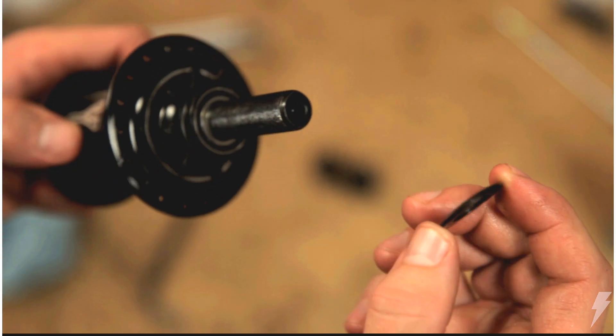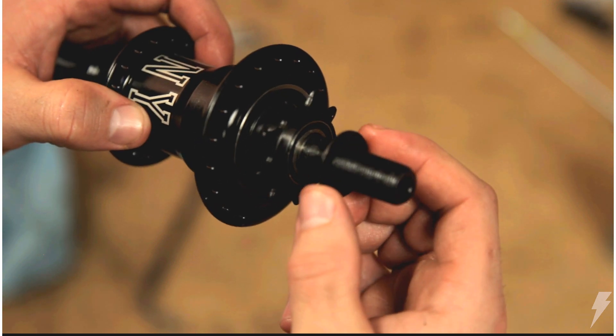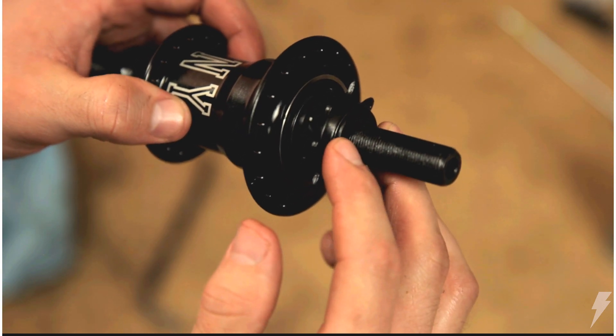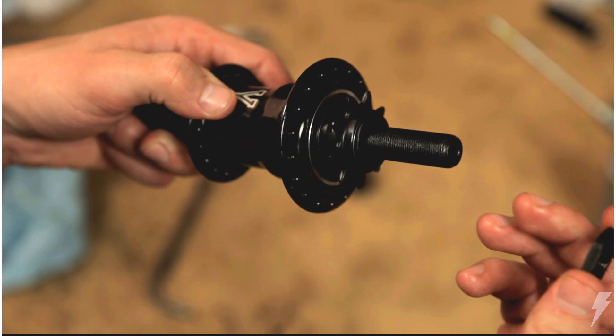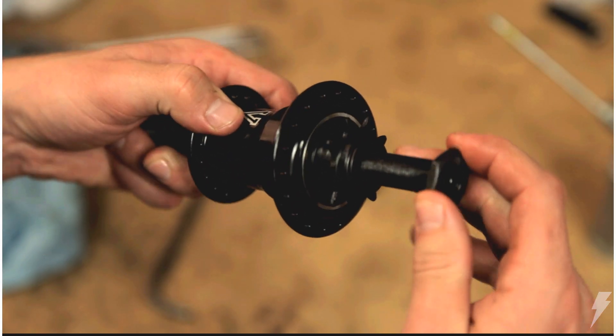Now hammer the axle back into place until the hub shell bearing is fully seated. Make sure the driver is fully threaded in before reinstalling the tapered cone spacer. The tapered end should be facing the driver to contact the inner bearing race.